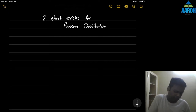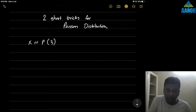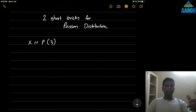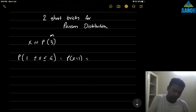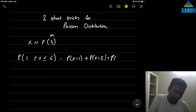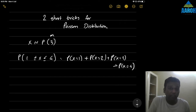Let's immediately start. Let's assume that X follows Poisson distribution with parameter three. You should know what Poisson distribution is — otherwise you can watch the video available for free on the channel. So let's assume X follows Poisson distribution where m is three, and we want to find the probability that X is between one and four, meaning P(X=1) + P(X=2) + P(X=3) + P(X=4).